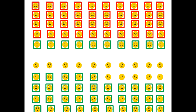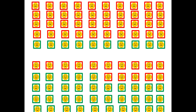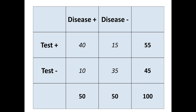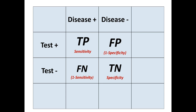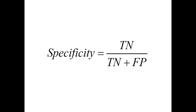Now, 15 of the remaining people who did not have the disease tested positive. Those 15 people are considered false positives. So specificity can also be thought of as the ratio of true negatives over true negatives plus false positives. That's all sensitivity and specificity are.